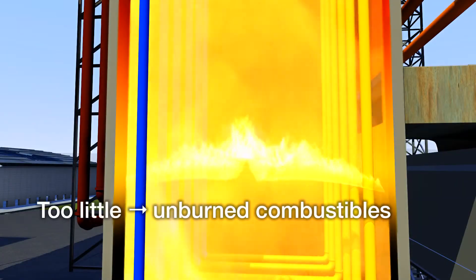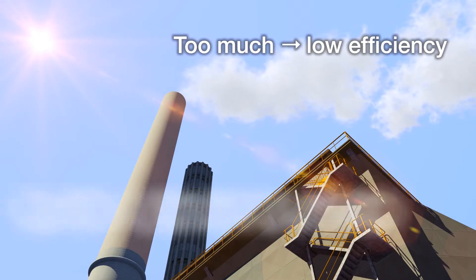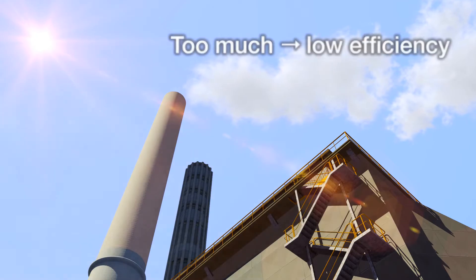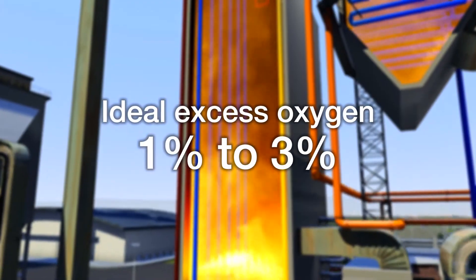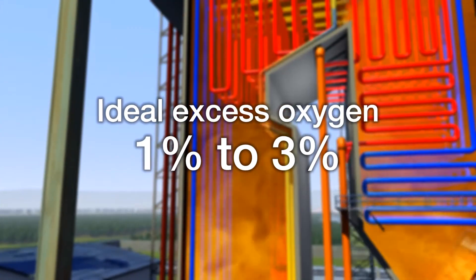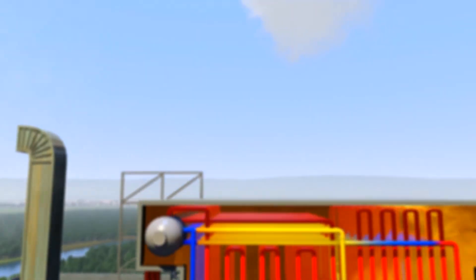Whilst too little air will produce unburned combustibles, too much air will reduce combustion efficiency, with heat being lost via the stack as hot flue gases. An ideal figure for excess oxygen is between 1 and 3%, depending on a range of factors, including the fuel being combusted, the steam load, and the condition of the boiler burner.